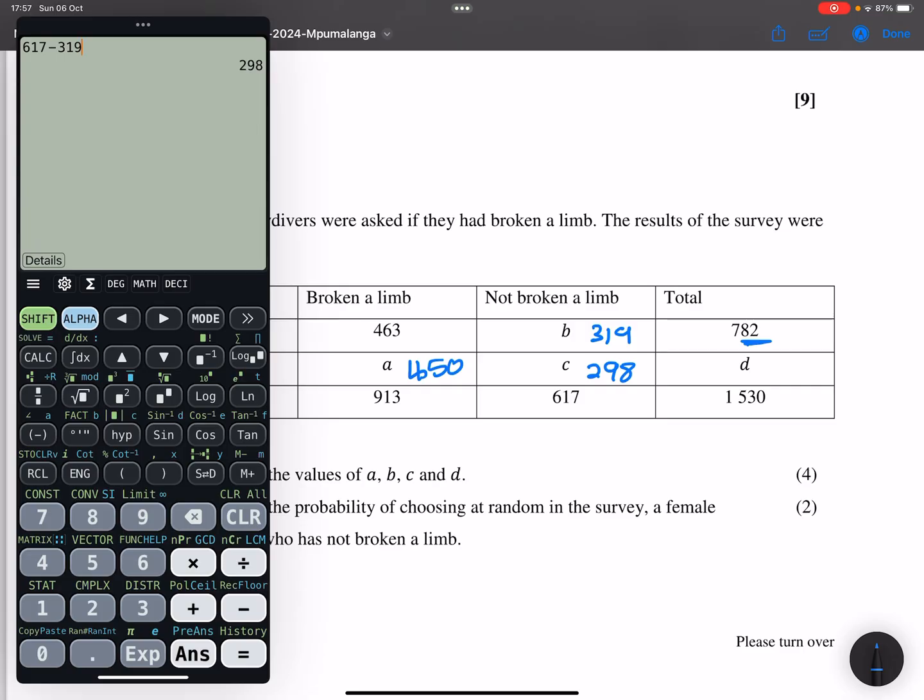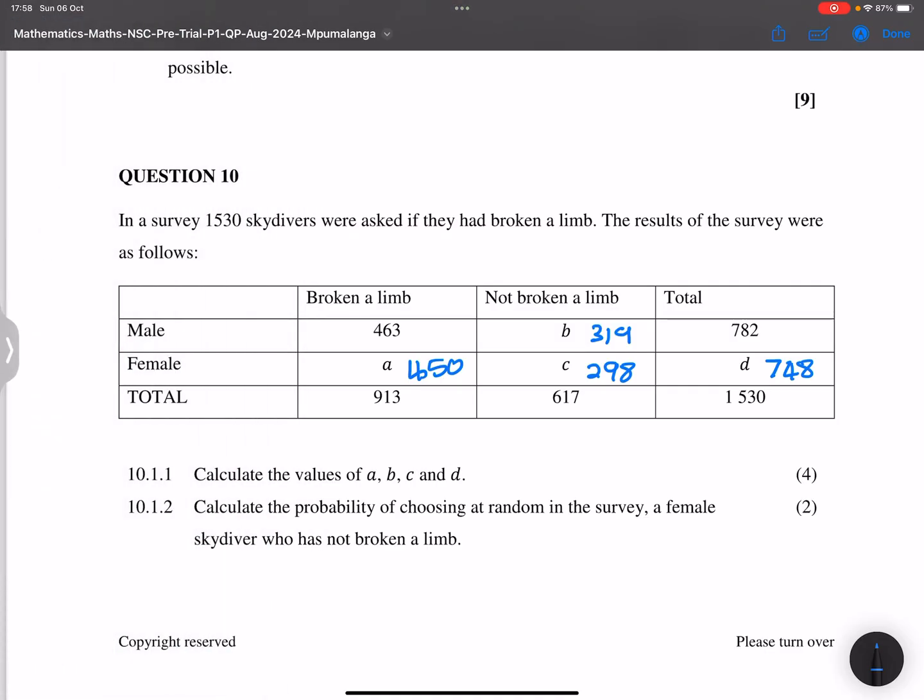And finally, for D, we can say 1530 minus 782. And that gives us 748. So that is truly how this cookie crumbles. So quite easy to do contingency diagrams.